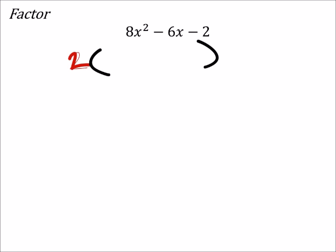And then on the inside, I've got 8 divided by 2 is 4, and I've still got my x squared. Minus 6 divided by 2 is 3, so 3x. And 2 divided by 2 is 1.